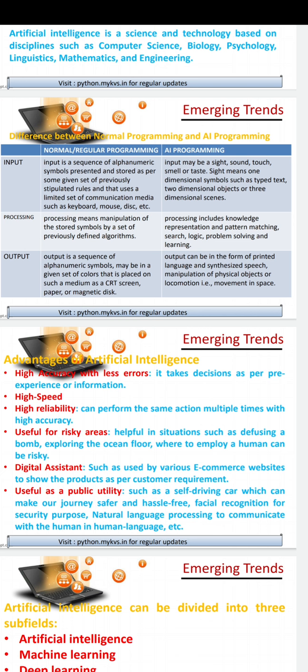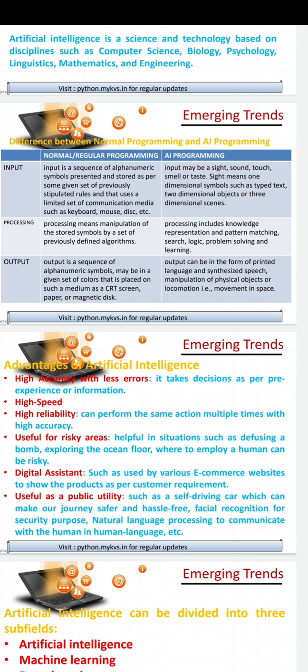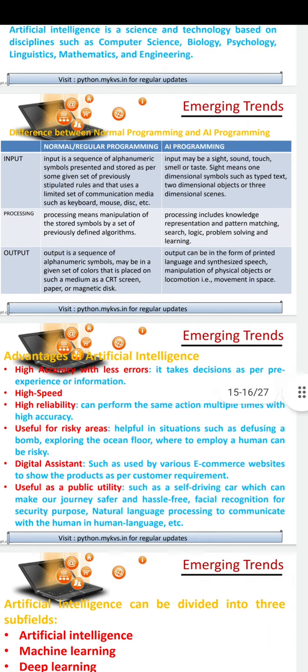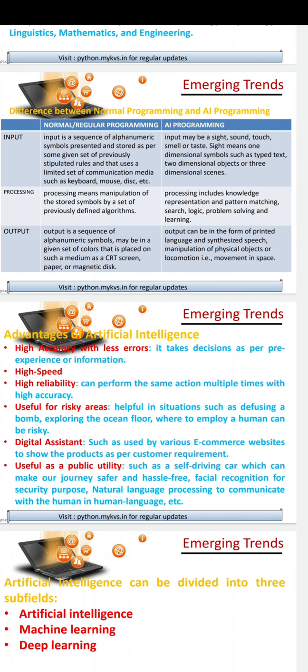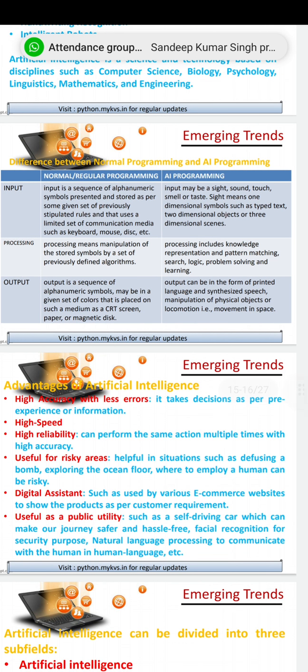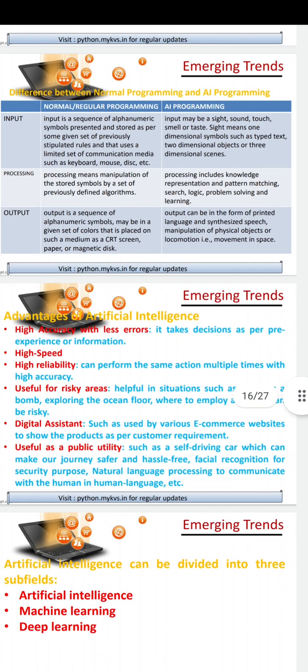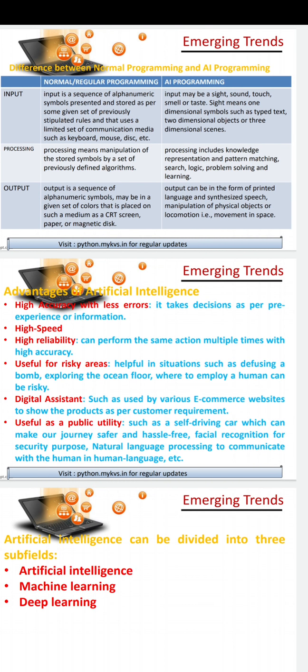So this is the way programming works: we have input, then process, and output. In normal programming, after processing, 2 plus 2 gives output of 4 — alphanumeric output. In AI programming, the system matches the fingerprint received against the saved fingerprint to check if it matches or not. If it matches, the output is that the phone opens.